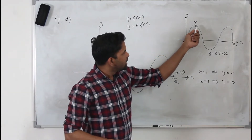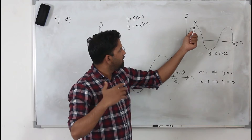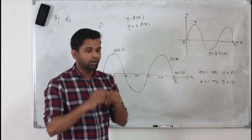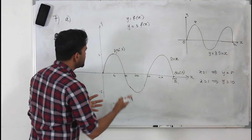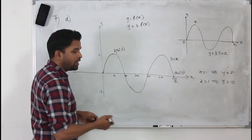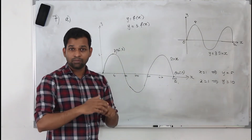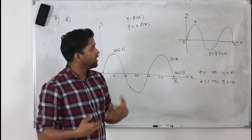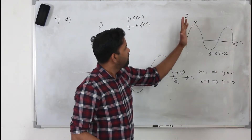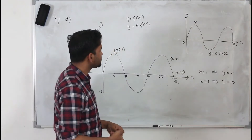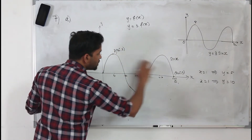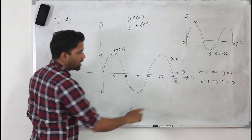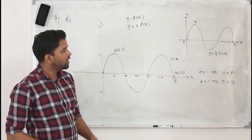Even in the diagram, the question should state that P is the maximum point, because P can be any point — you cannot just assume it's the maximum. But by looking at the curve, we take it as the maximum point. So, on the sine x curve, the maximum point is 90 degrees comma 1, and Q is at 540 degrees comma 0.